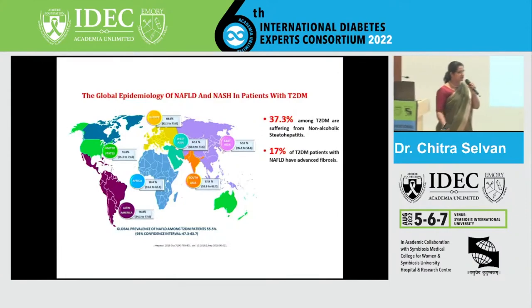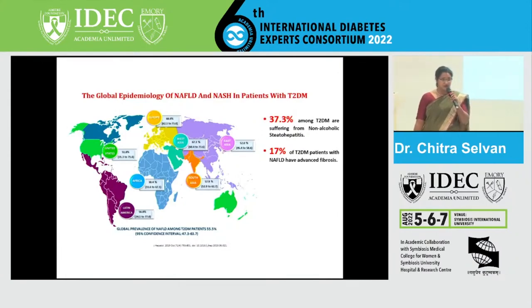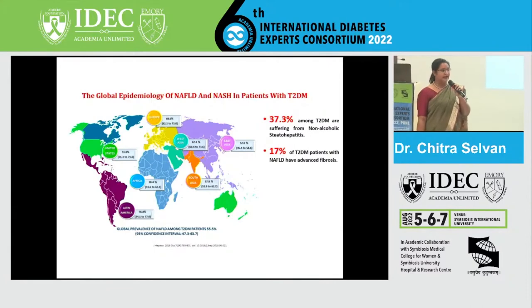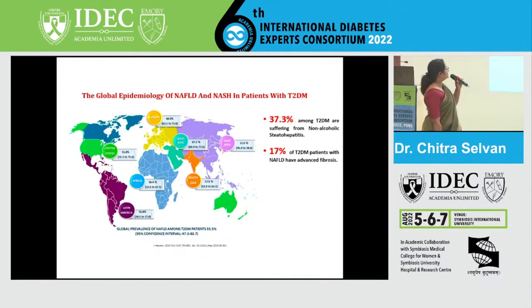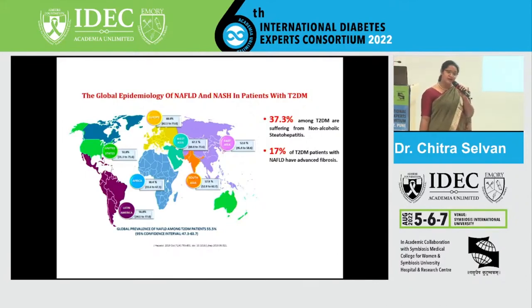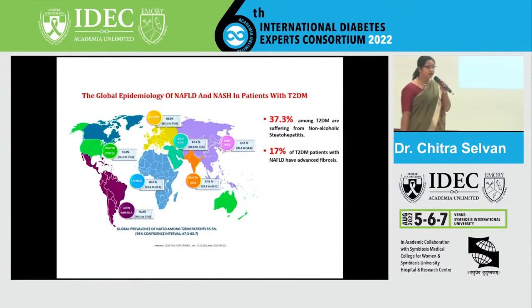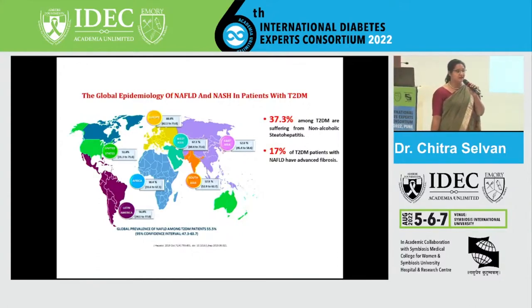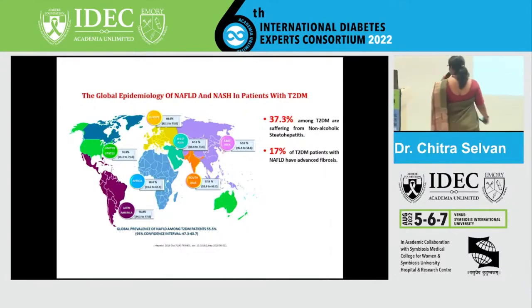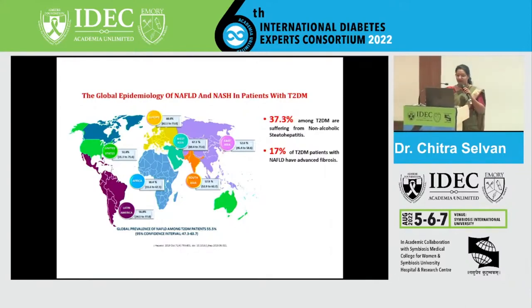If you're thinking why diabetologists, physicians, and endocrinologists should worry about this — this global map shows the burden of NAFLD and NASH in individuals with diabetes. In South Asia, the prevalence of non-alcoholic fatty liver disease is about 57.9%, meaning one in two patients you see in your clinic could potentially have NAFLD. NASH with hepatitis or inflammation might be present in about one-third of your patients, and a good 17% might have fibrosis.